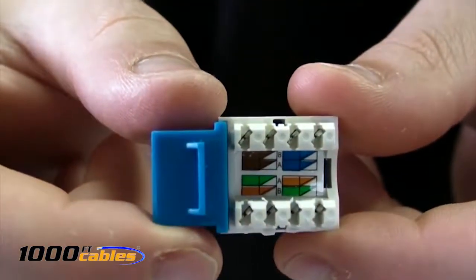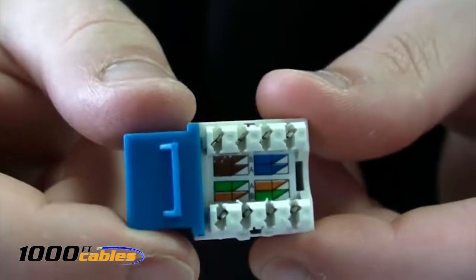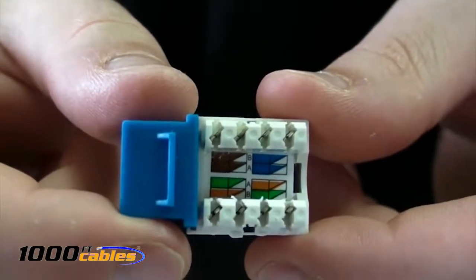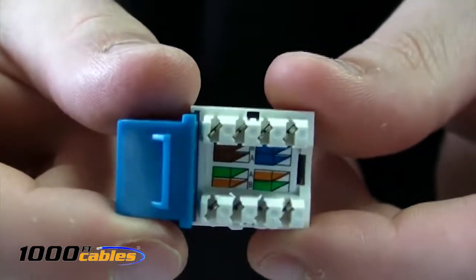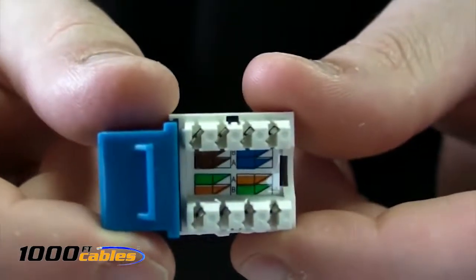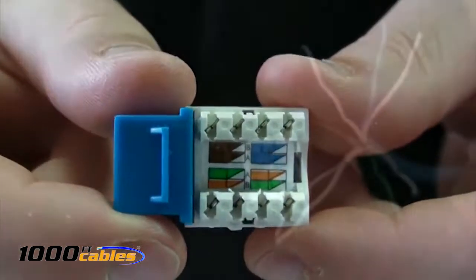What you'll notice next about your Cat5 keystone jack is there's eight pairs of colors inside of it. What does this mean? There's an outside pair, which is B, as you can see on the top, on the very bottom there. There's inside pairs, which are A. A is only used in very special circumstances. The majority of cables today are B.